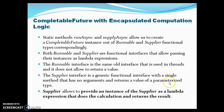The Supplier interface is a generic functional interface with a single method that has no argument and returns a value of a parameterized type. Supplier has only one `get` method which can do some processing and finally return a generic kind of object. Supplier allows you to provide an instance as a lambda expression that does the calculation and returns the result.